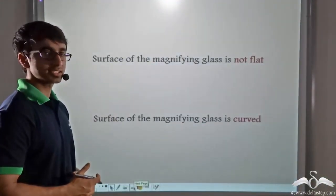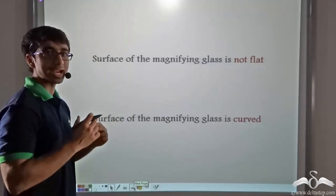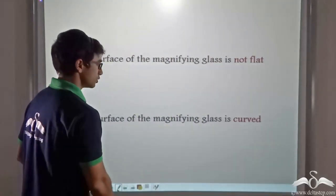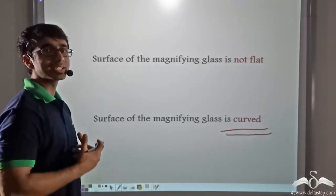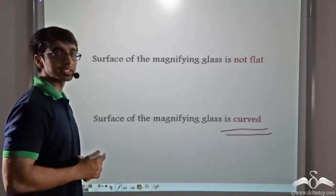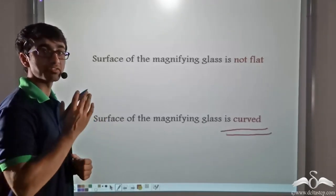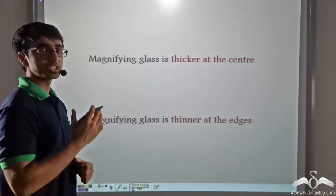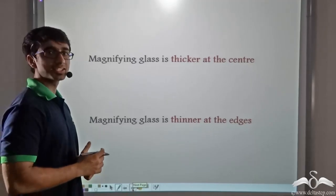If you feel the magnifying glass, you will find that its surface is not flat — it is actually curved. The surface is curved and there is no reflecting surface, so clearly it is not any sort of mirror.